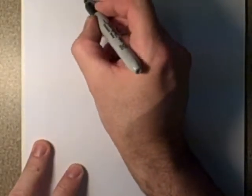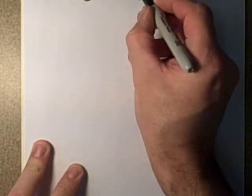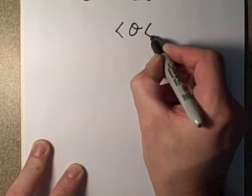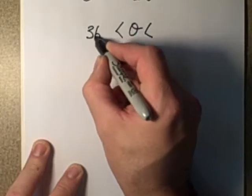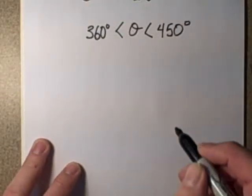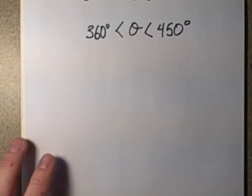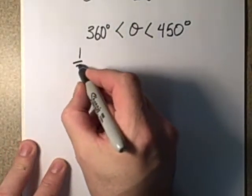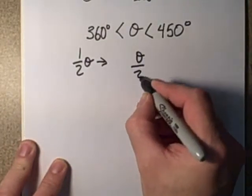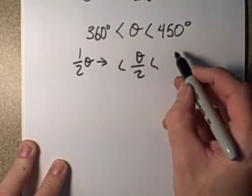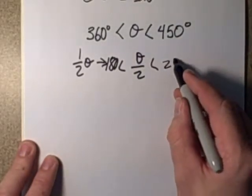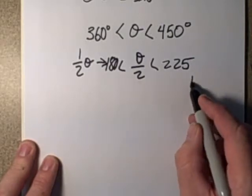So let's say that we had originally theta was in between 360 degrees to 450 degrees. So that would put half theta would then be in half of each of these. So half of 360 is 180 and half of 450 is 225. So this would be, for the half angle, this would put it in the third quadrant.